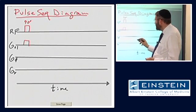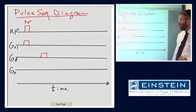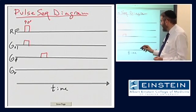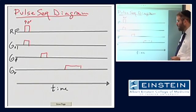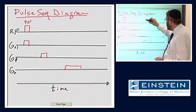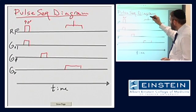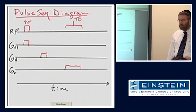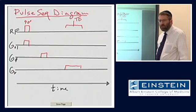Next is that we have to turn on a phase encoding gradient, which is turned on at some amplitude for some period of time. And following that, we have to turn on a frequency encoding gradient. And we turn it on during the period of time that we are going to sample, which is centered at Te. So this would sort of be our simplest example of what it takes to generate an MR signal.